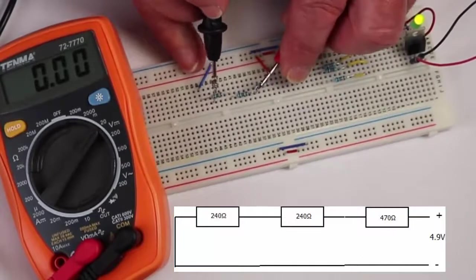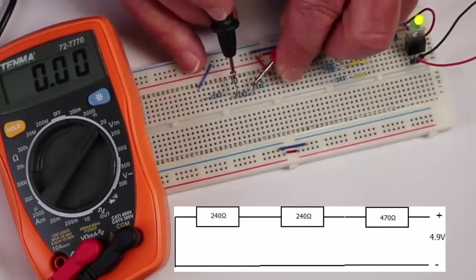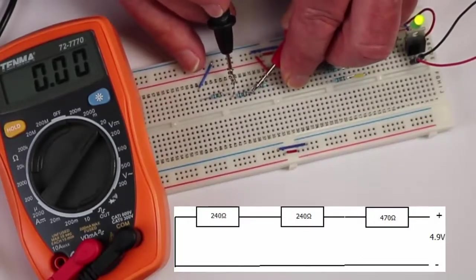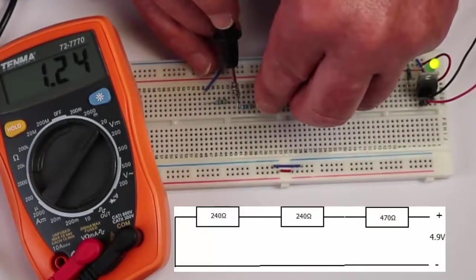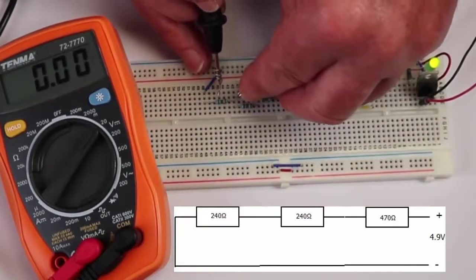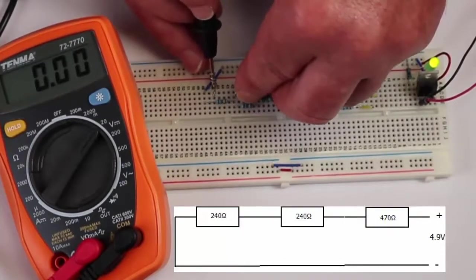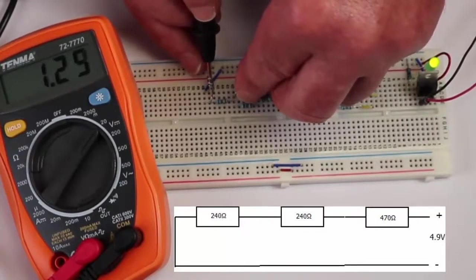And if we go on to our next resistor here which is a 240 ohm resistor, it's 1.24 and we should find the same voltage across here. 1.24.